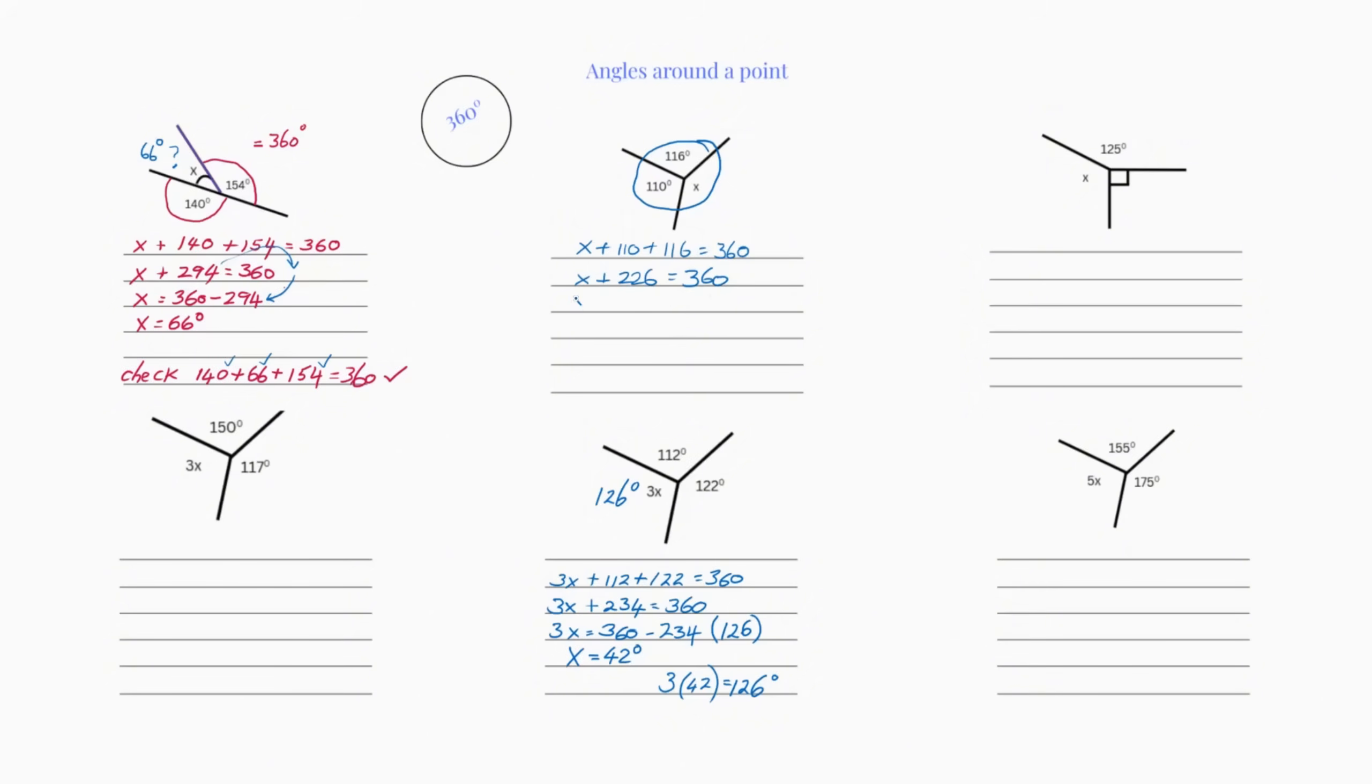So now we have x equals 360 minus our 226. I've got to work this out in my head. Well, if I haven't got a calculator, what would we do?